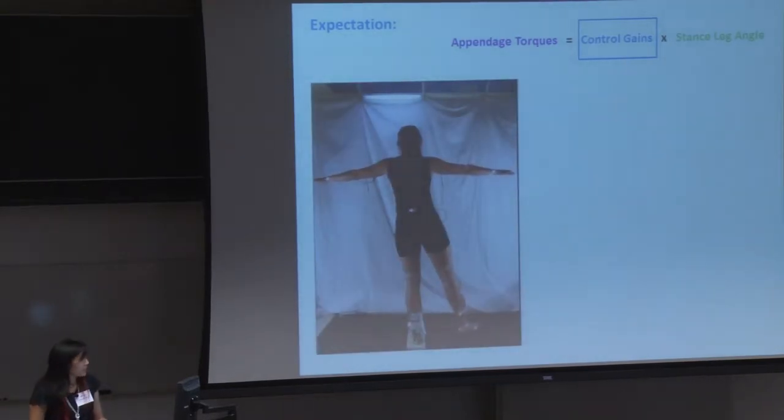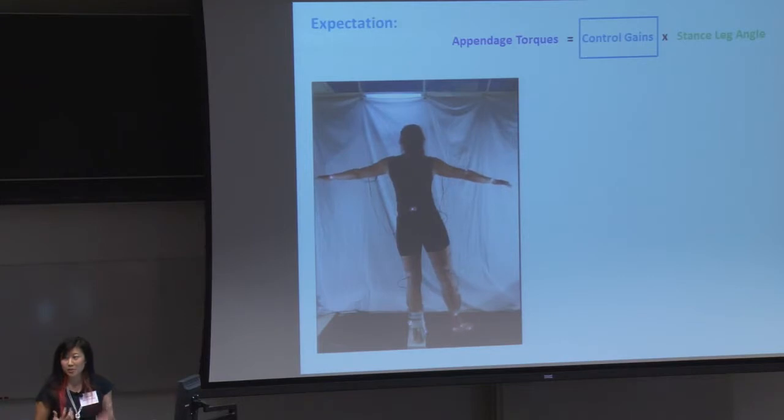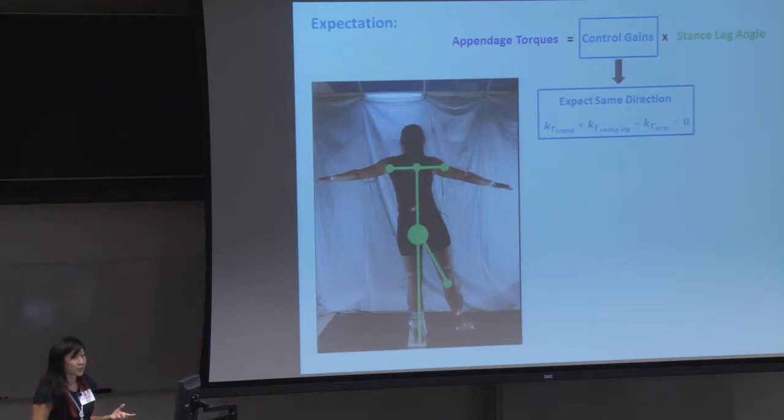So we took human data to see if what humans do match our expectations. So we had people just balance on one leg, and we restricted their ankle so they can only use the appendages to balance. There were no external perturbations in this case. So we empirically identified controller gains from their appendage angles and angular velocities and their appendage torques. And so from my expectations, we expect that the gain from the trunk, the swing leg, and the arm to be positive in the sense that they're going to act in the same direction as their displaced stance leg.